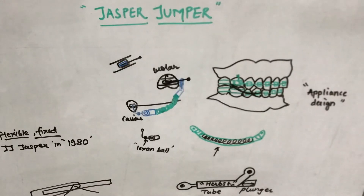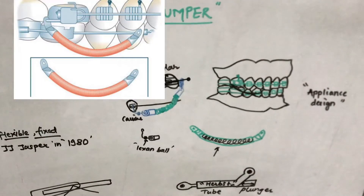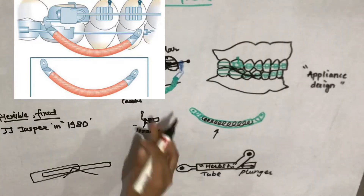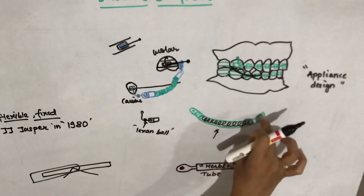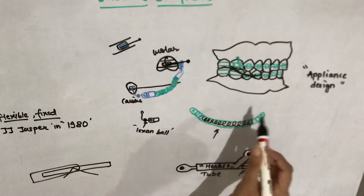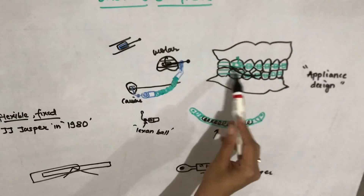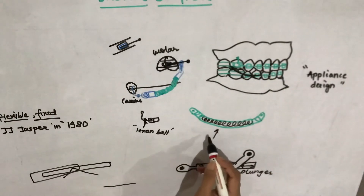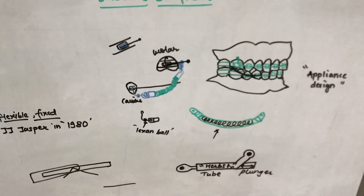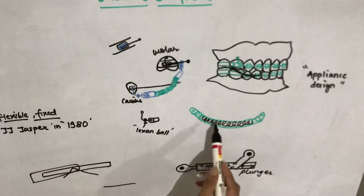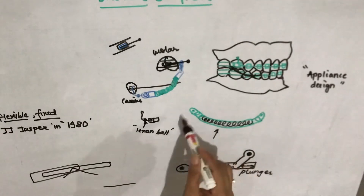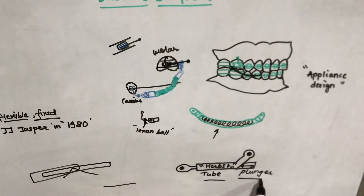The Jasper Jumper uses a modular system. The module can be attached to fixed appliances placed on the upper and lower teeth — so the patient already has fixed orthodontic braces, and the Jasper Jumper module is fixed onto those. This module is analogous to the tube and plunger of the Herbst appliance, but it is more flexible.